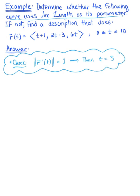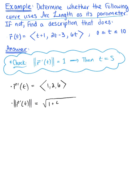Using that vector-valued function, we differentiate to find the tangent vector. Differentiating, we're left with ⟨1, 2, 6⟩. There are no scalar multiples, so we go ahead and find the length using the distance formula: √(1² + 2² + 6²) = √(1 + 4 + 36) = √41, which certainly does not equal 1. So therefore, t is not the arc length parameter — the curve is not using arc length as its parameter.